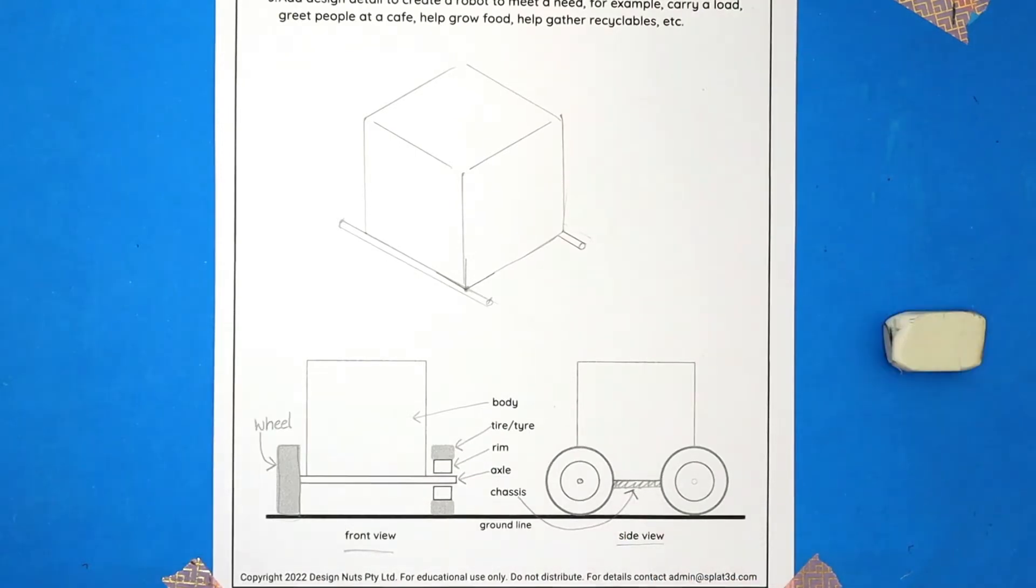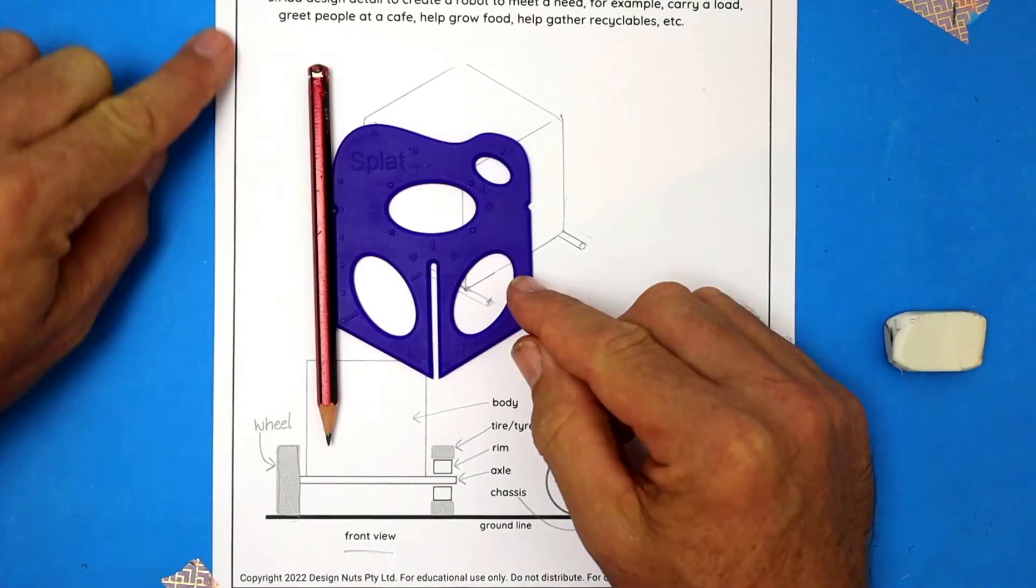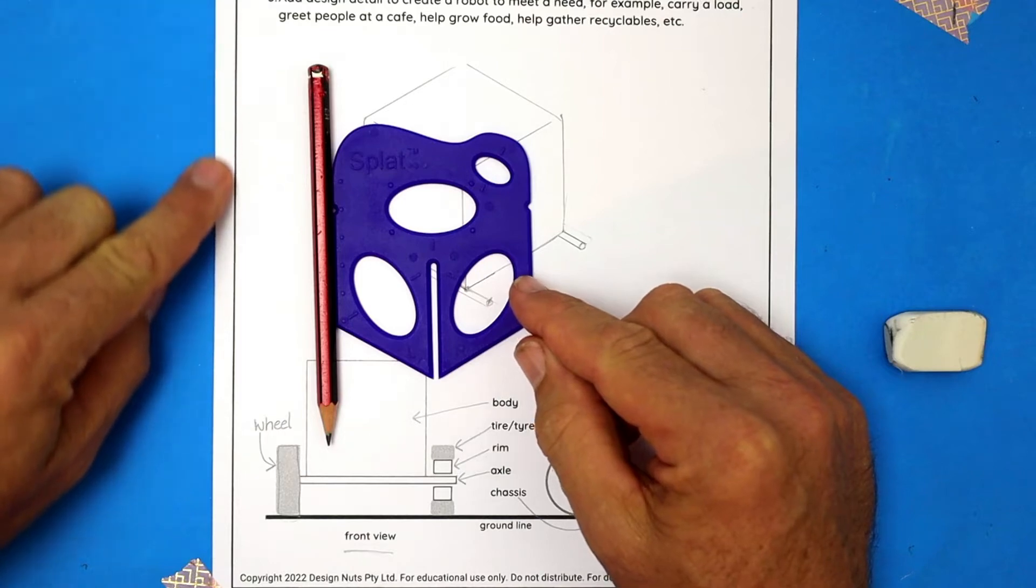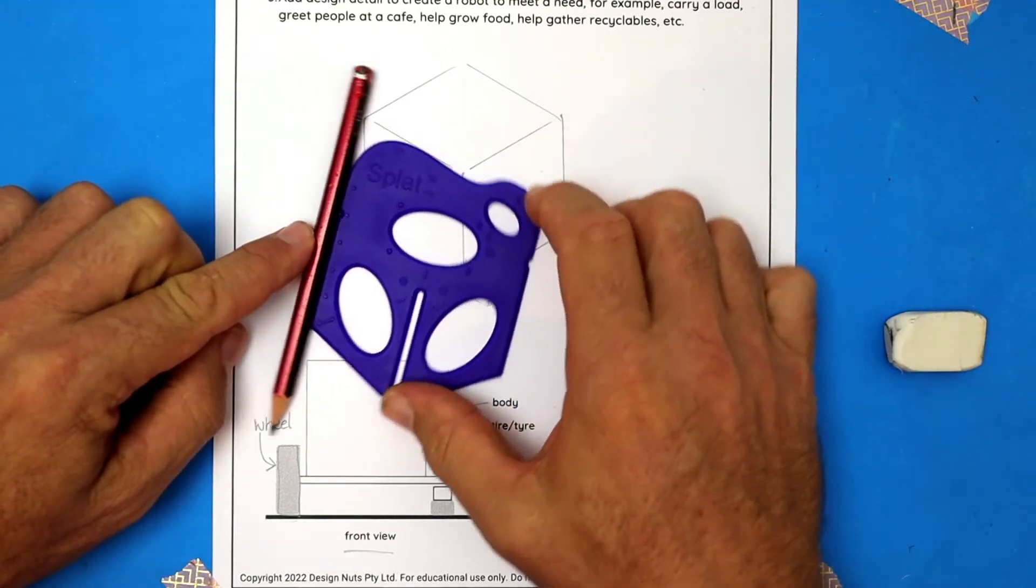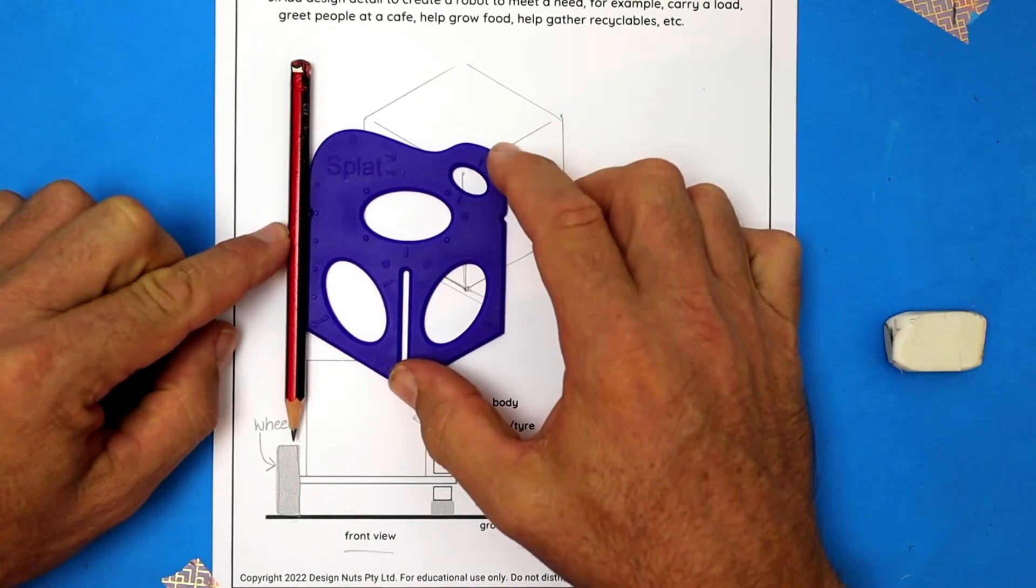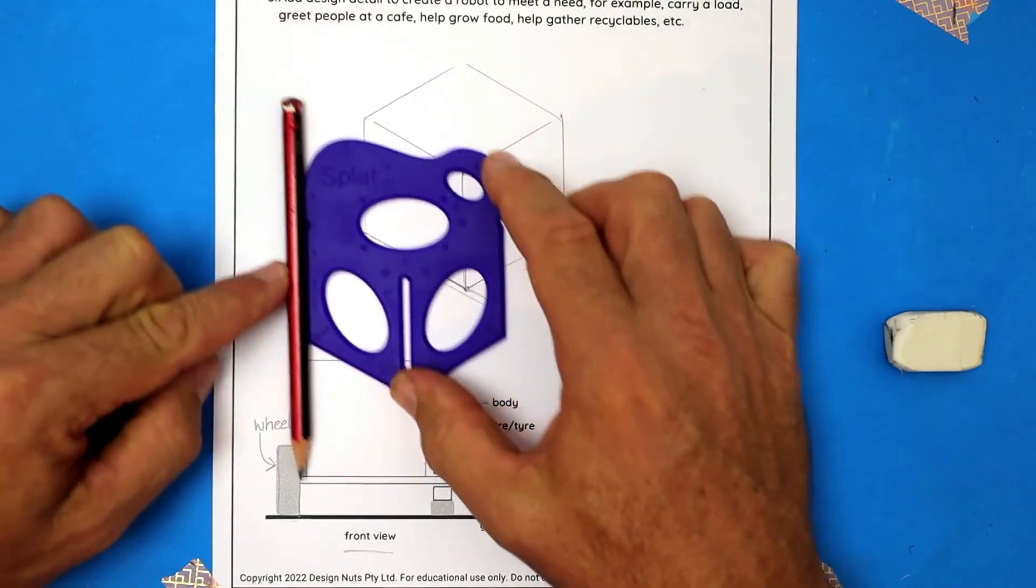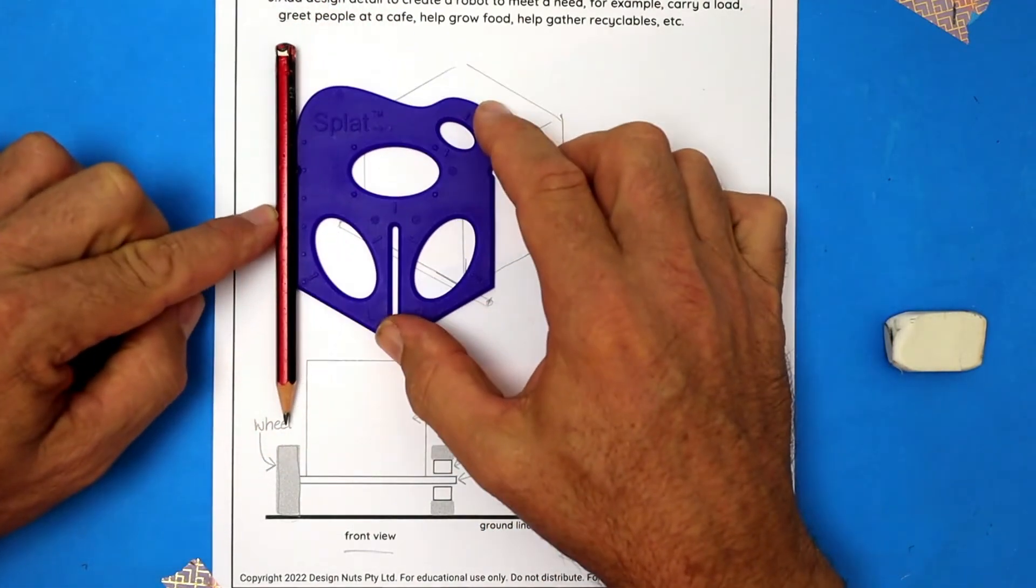Now it's time to draw the wheels onto the axles. Try to keep the splat straight up and down as we draw the wheels. Here's an exercise. Looking at the side of the page, holding a pencil beside the splat, try to move the splat around the page, keeping the pencil straight up and down. Then we're good to go.